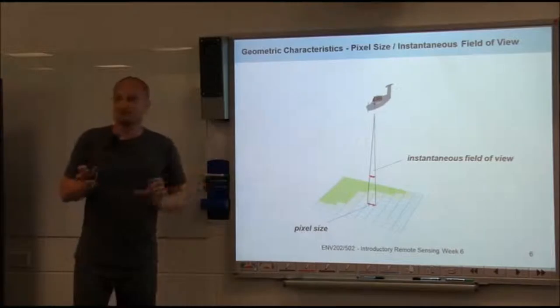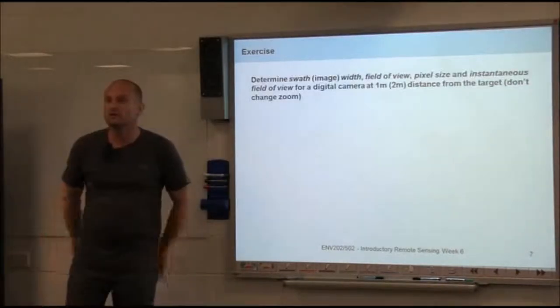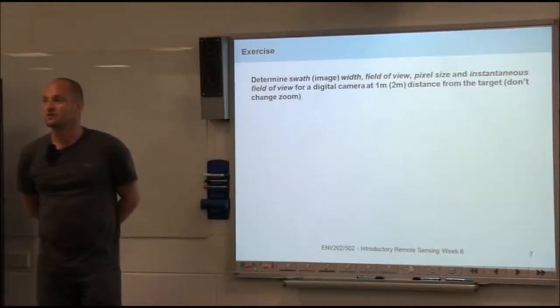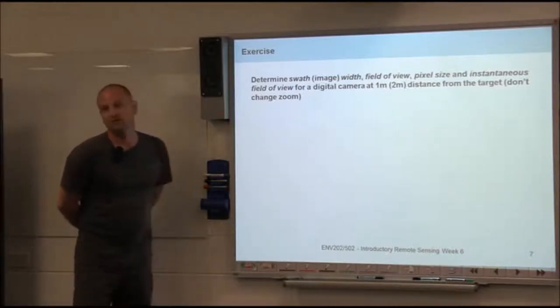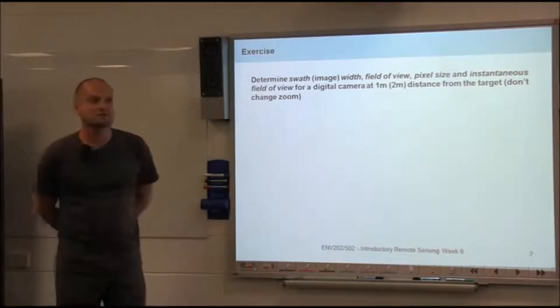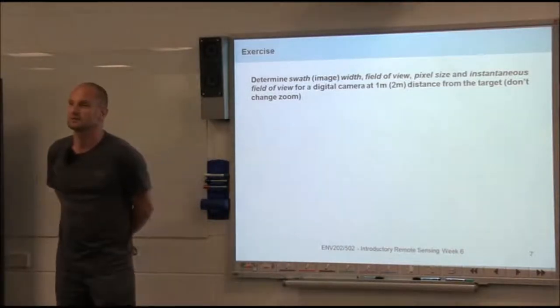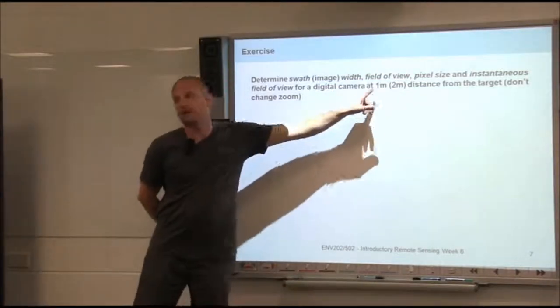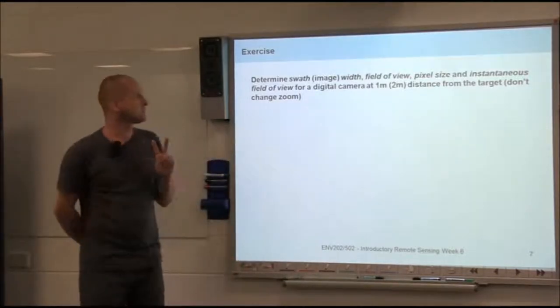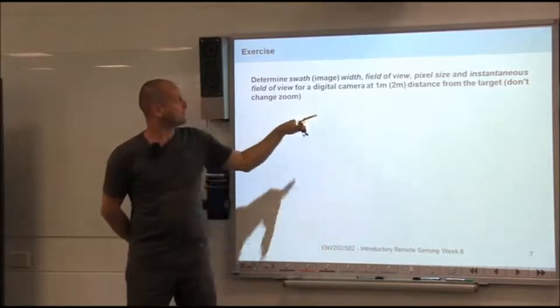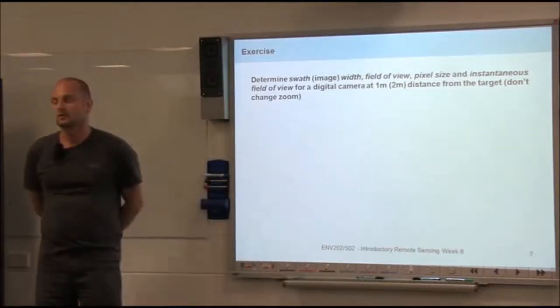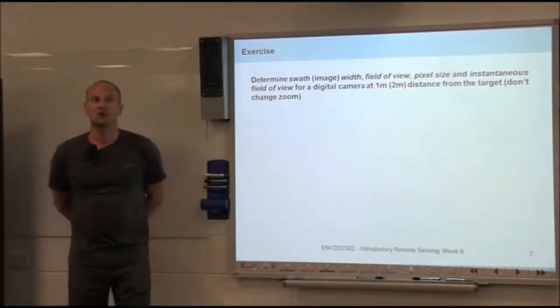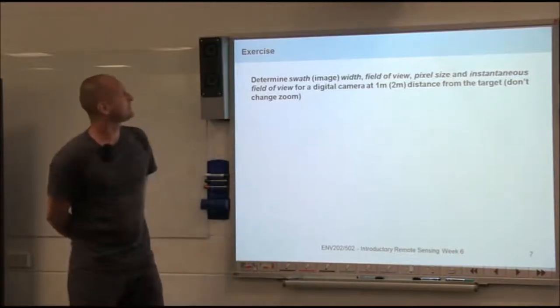Alright. Now that we've defined these terms, we're going to try to measure them. That's why we asked you to bring a digital camera. We want you to determine swath width or image width, field of view, pixel size, and instantaneous field of view. Any ideas how you could do that for a digital camera? I want you to do it for two distances. And please don't change the zoom for your camera, because when you change the zoom, you obviously change these parameters. So how would you go about it?